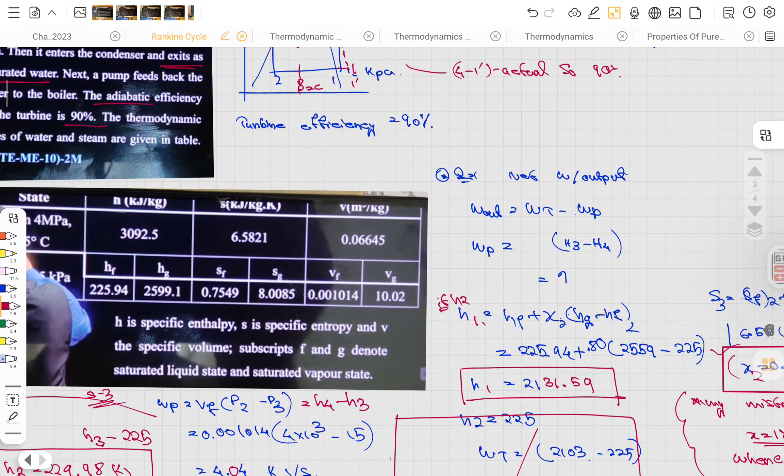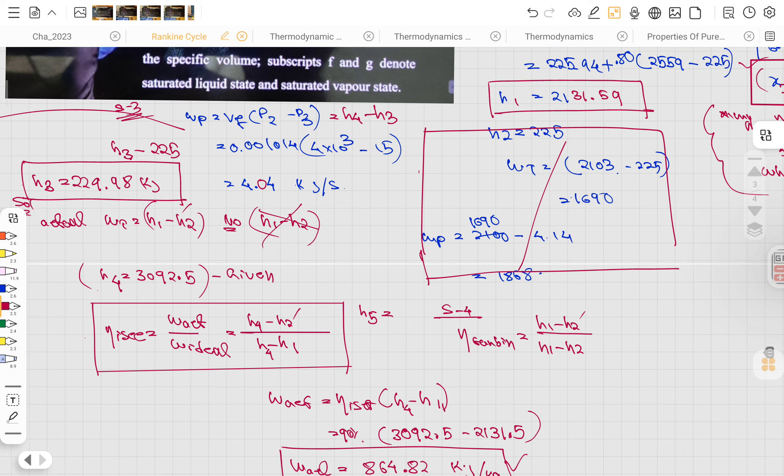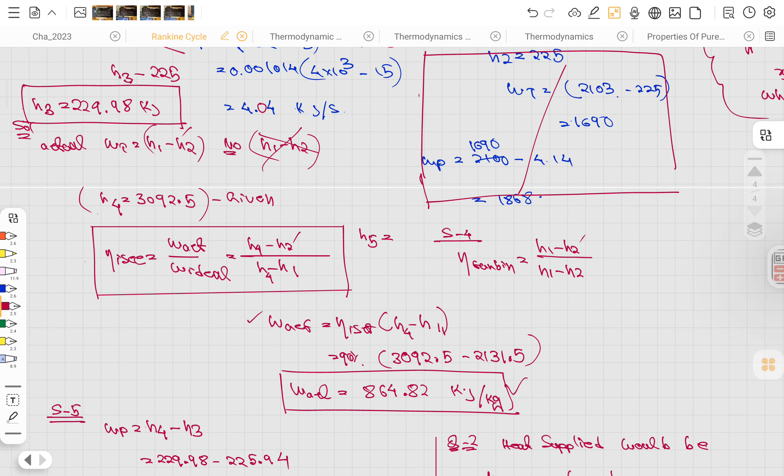What do you need? h4 and h1. h4 is given here, so we're just calculating h4 and h1. Then it's the formula: w actual and w ideal. We're getting w actual.